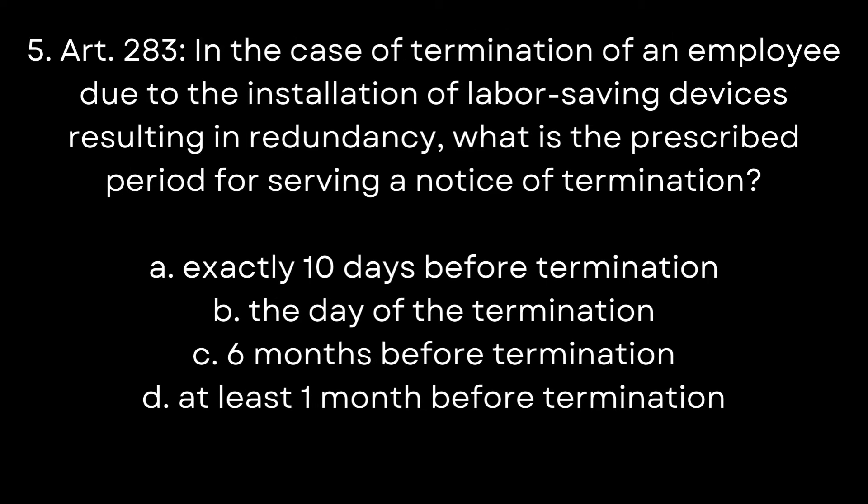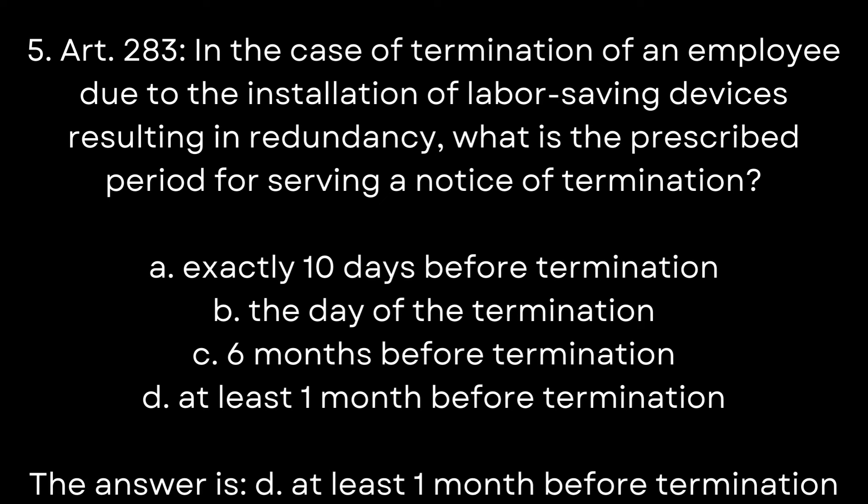Question 5. Article 283. In case of termination of an employee due to the installation of labor-saving devices resulting in redundancy, what is the prescribed period for serving a notice of termination? A. Exactly 10 days before termination. B. The day of the termination. C. Six months before termination. D. At least one month before termination. The answer is D. At least one month before termination.